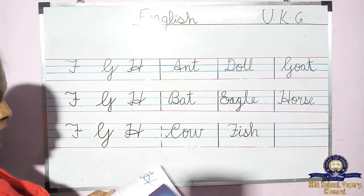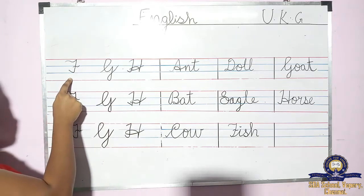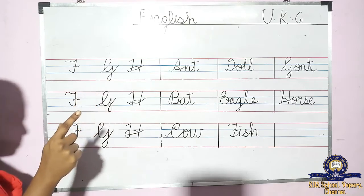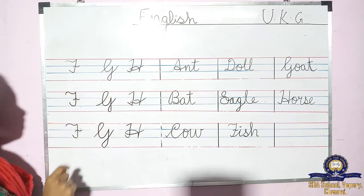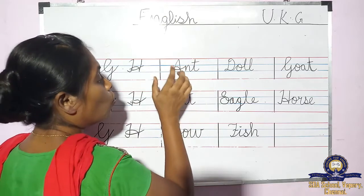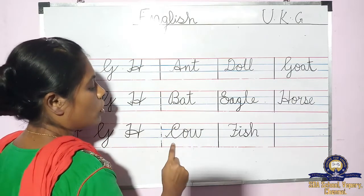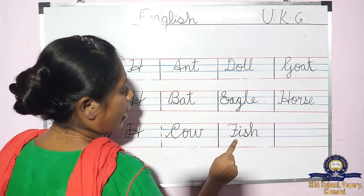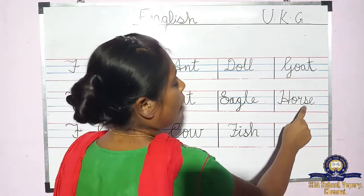Your assignment — you have to write from page 10 to 14. What's the first letter? F. The next letter? G. The next letter? H. F, G, H. Then you have to write the alphabets and words: A, N, T — ant. B, A, T — bat. C, O, W — cow. D, O, L, L — doll. E, A, G, L, E — eagle. F, I, S, H — fish. G, O, A, T — goat. H, O, R, S, E — horse.